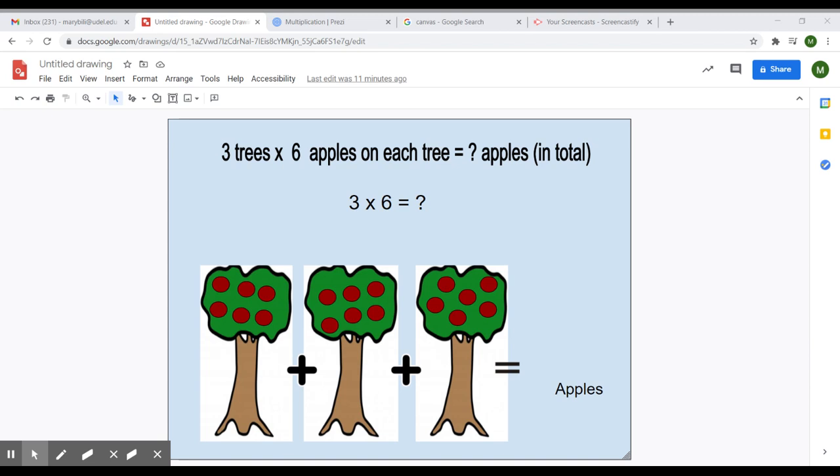Now, to solve this equation, three trees times six apples on each tree, which equals the apples in total, we are going to solve by addition.